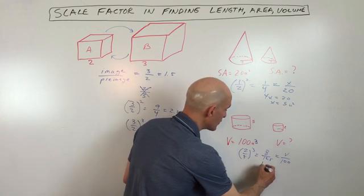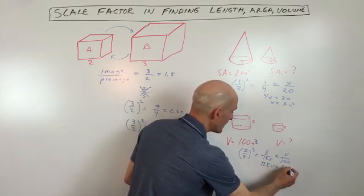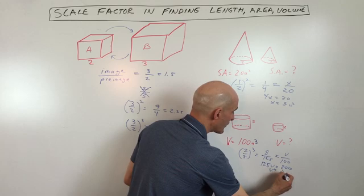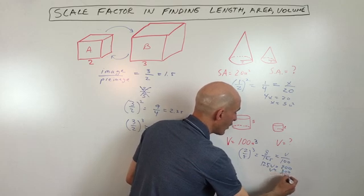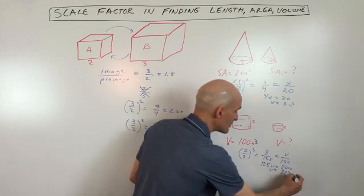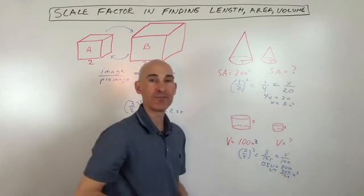So you can see this is going to be 125V equals 800 and if we divide, we get 800 over 125ths and that's going to be units cubed and you can reduce that or get a decimal.